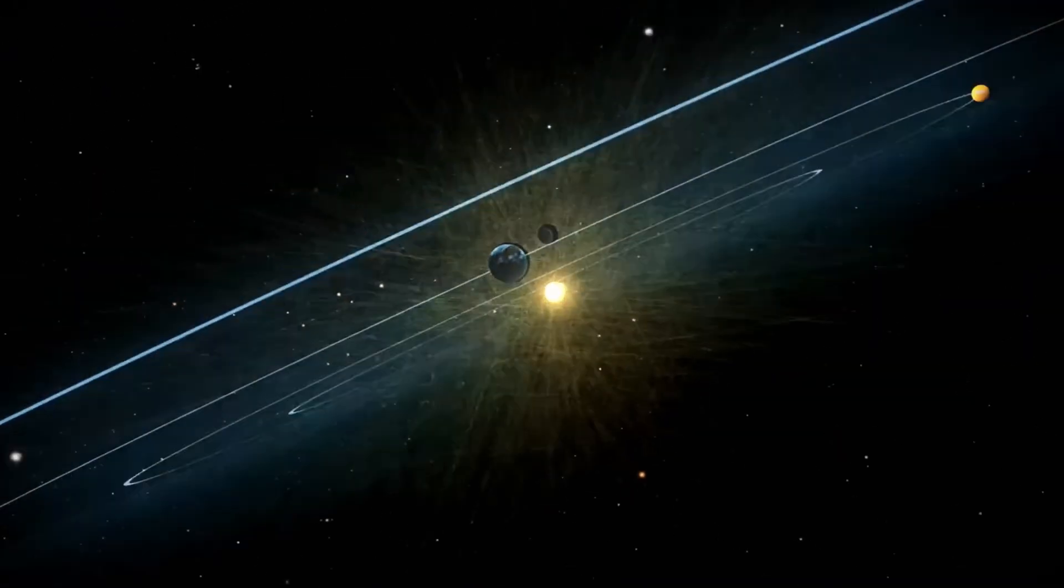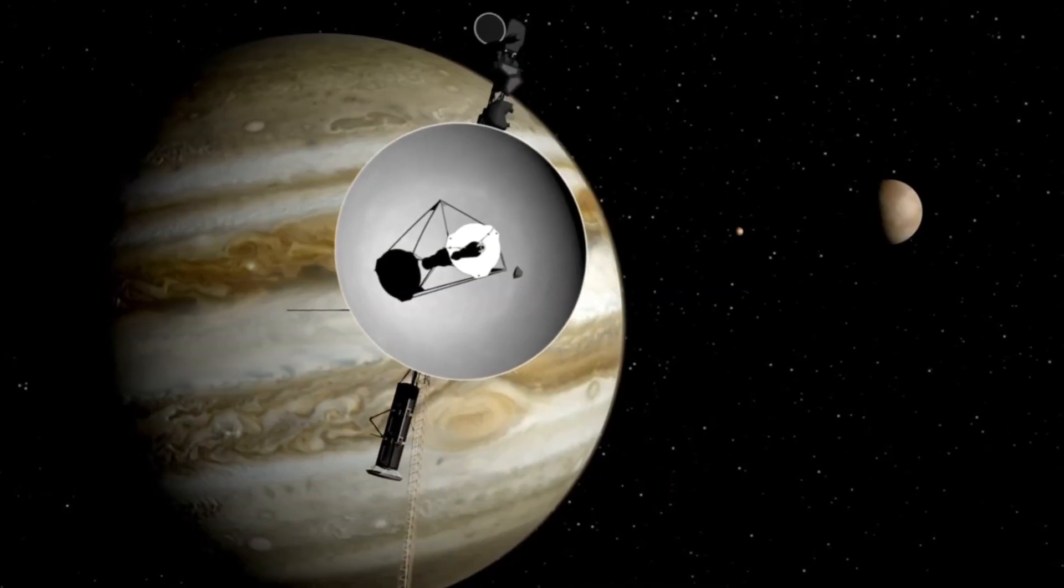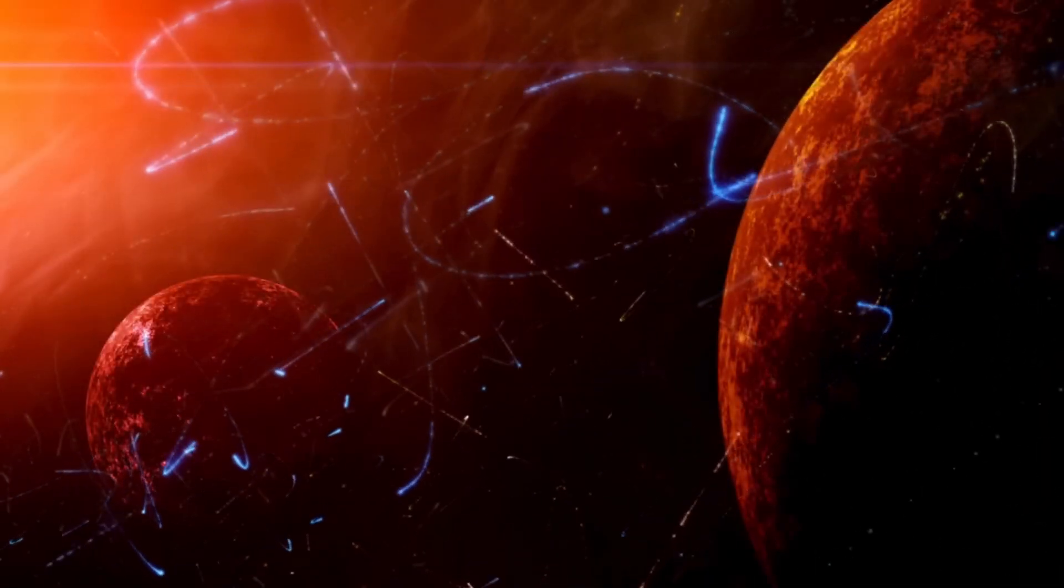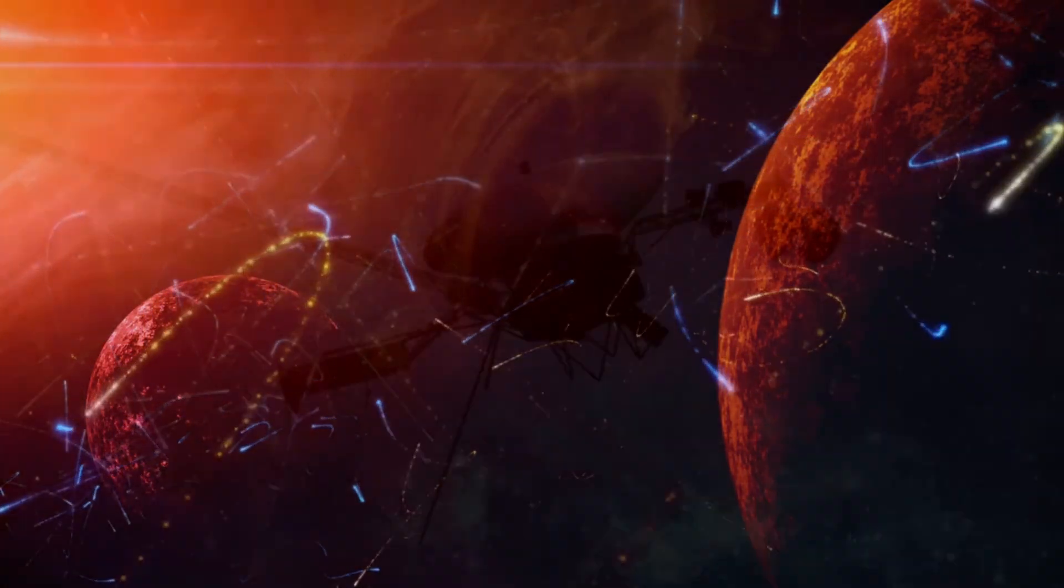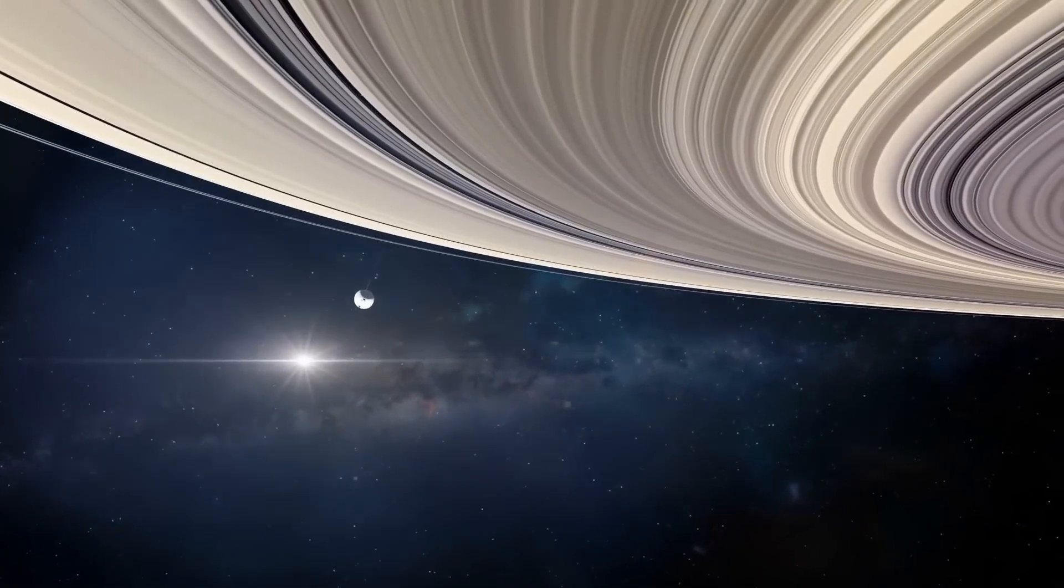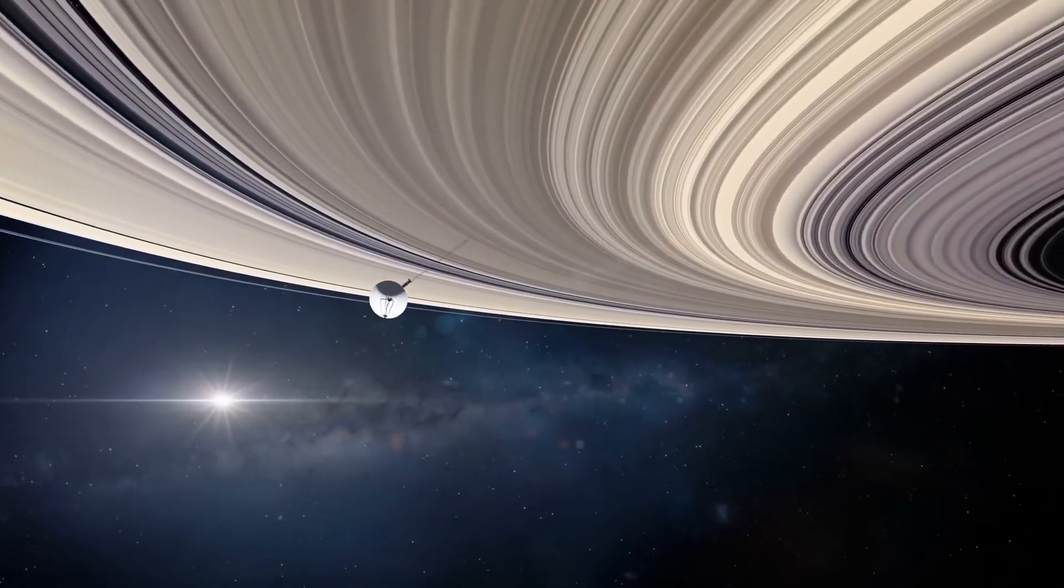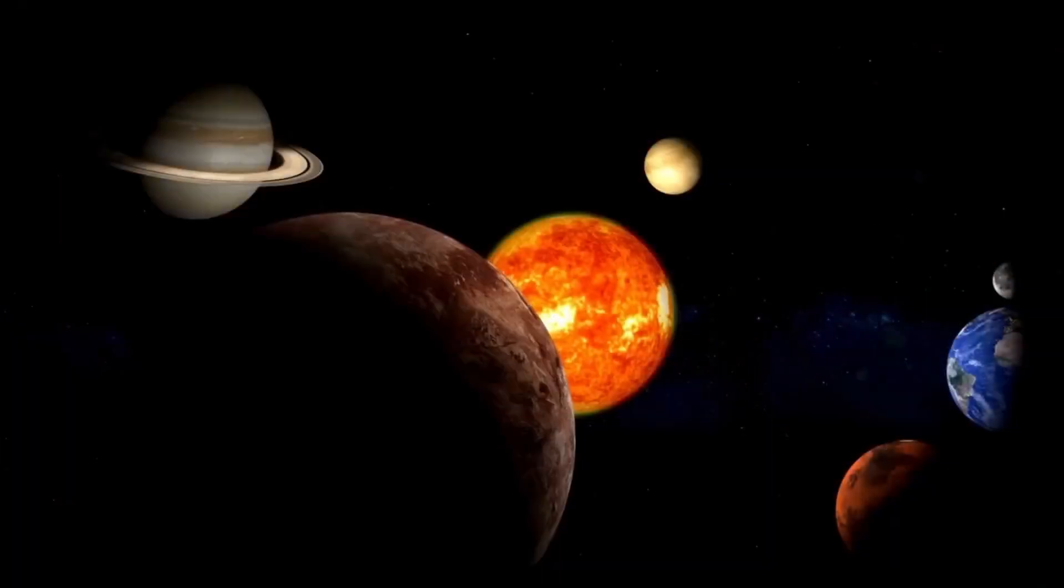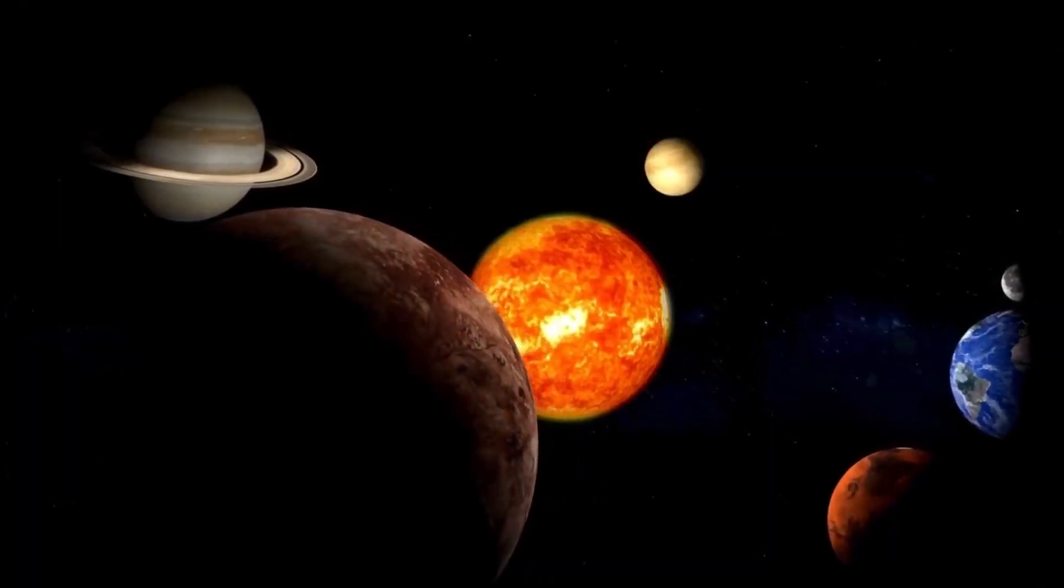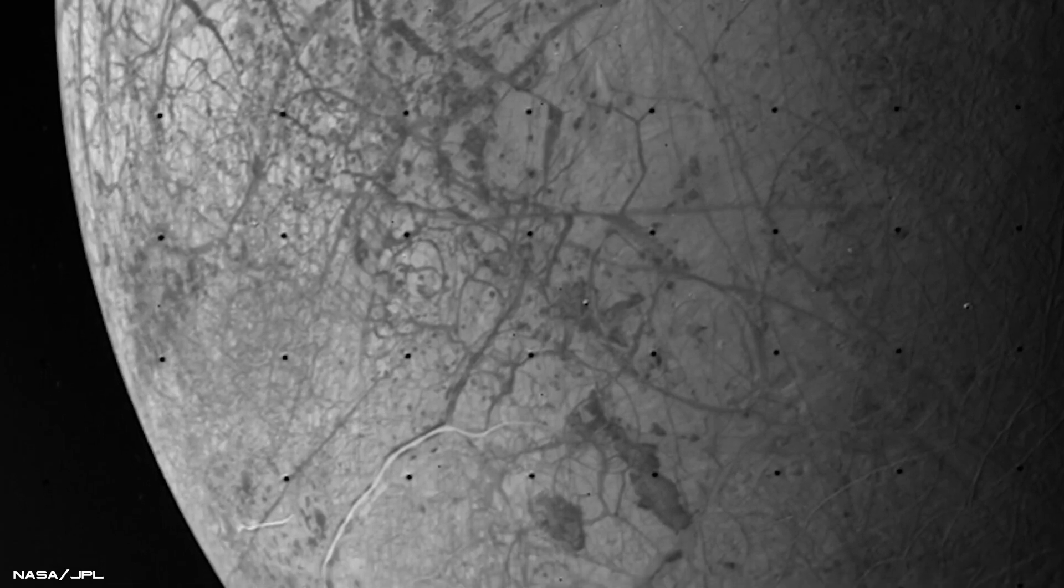To understand Voyager 2's groundbreaking findings, it's essential to grasp the Sun's dynamic nature. Far from being a tranquil ball of light, the Sun is a blazing nuclear furnace hurtling through the galaxy at approximately 450,000 kilometers per hour. Its surface is a tangled web of magnetic fields, driving a continuous flow of electrically charged particles known as the solar wind.